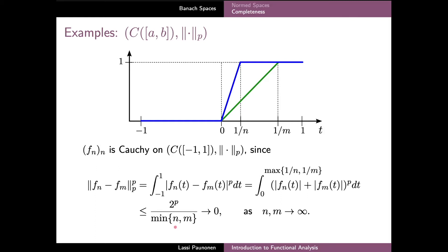This bound shows that the p-norm of the difference between fn and fm converges to zero when both n and m increase without bound. Therefore we have shown that the sequence fn is indeed a Cauchy sequence.